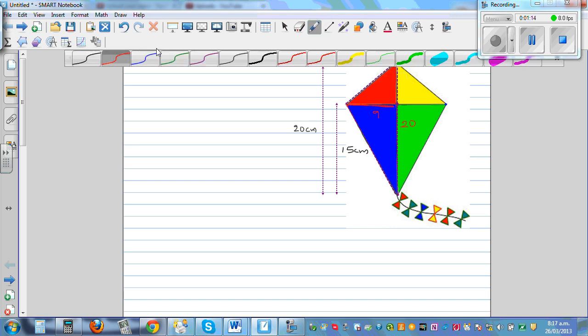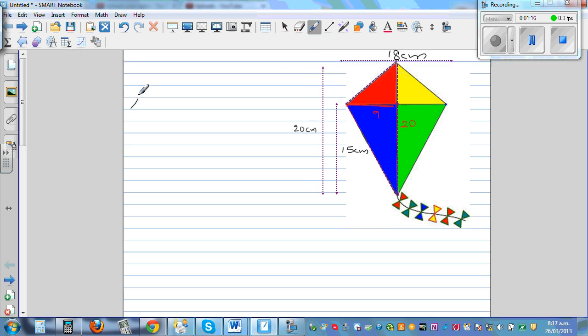Let me write area of each triangle, the red and the blue triangle. Red plus blue would be half base times height, or base times height divided by 2. Your base is 20. I like to write the formula like this: base times height, your height is 9, divided by 2.